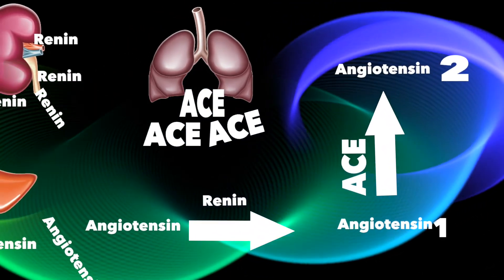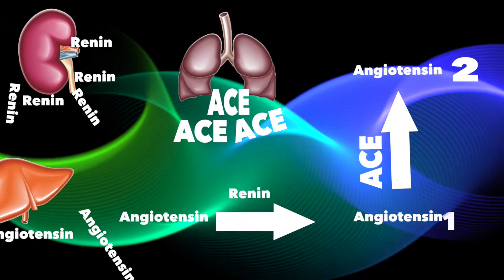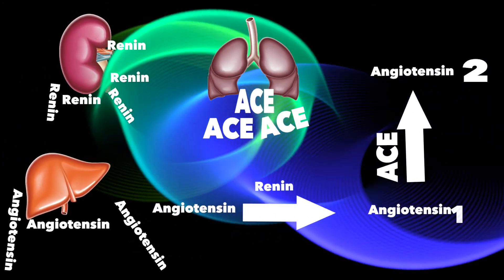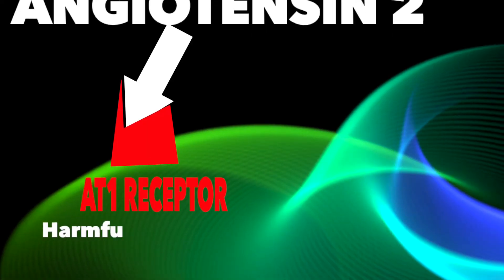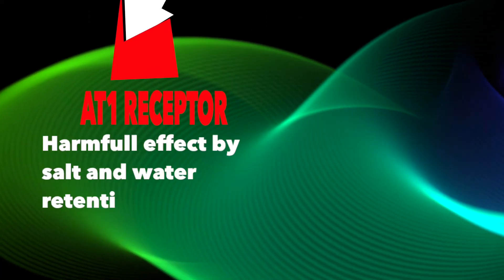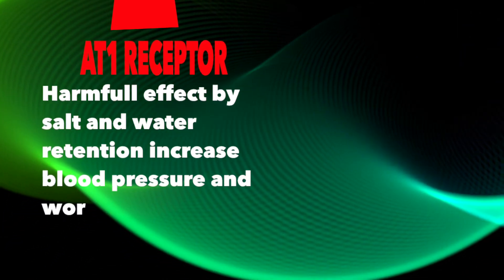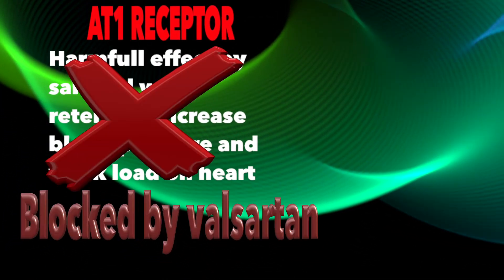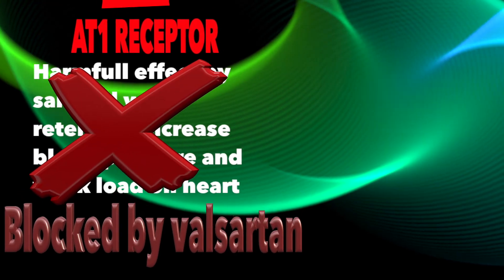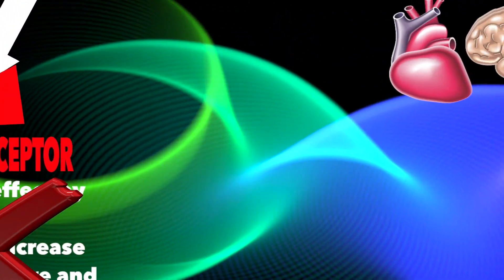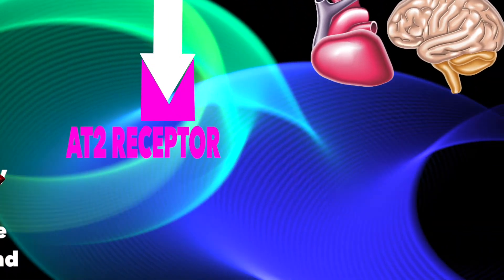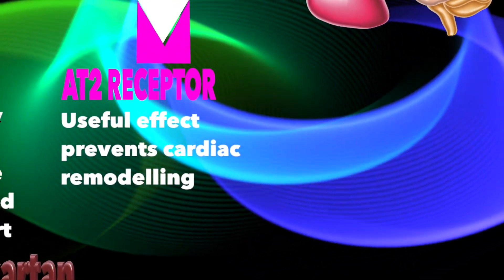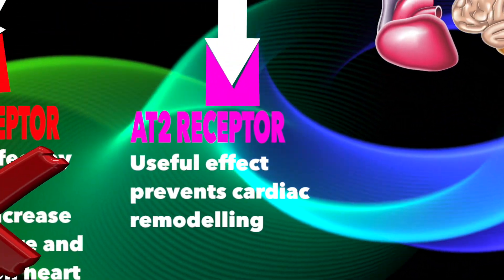The action of angiotensin-2 is mediated by two receptors. AT1 causes salt and water retention, a harmful effect, which is blocked by valsartan. AT2 prevents myocardial remodeling, a useful effect.